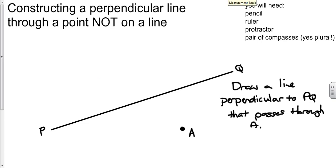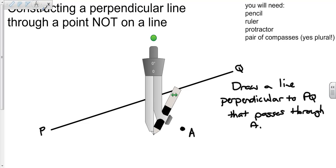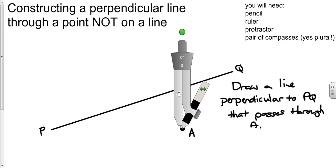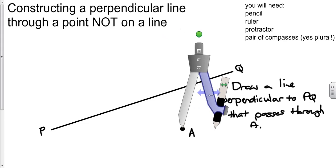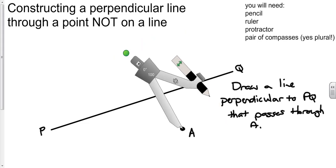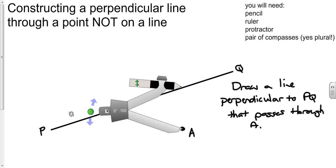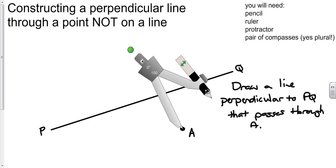If you've seen a perpendicular bisector, what we're going to do is use the compass to create a situation similar to that. And to do that, I'm going to place my point in A, extend the compass out, no particular length at this point. What I want to do is extend it far enough that it will cross over PQ.